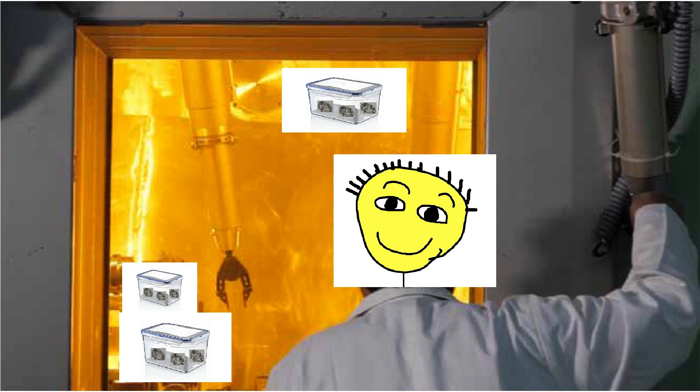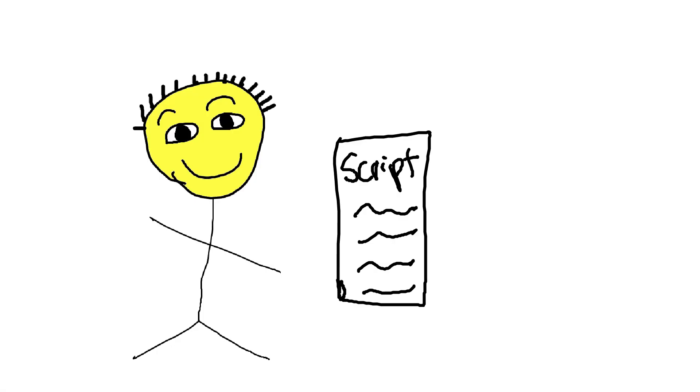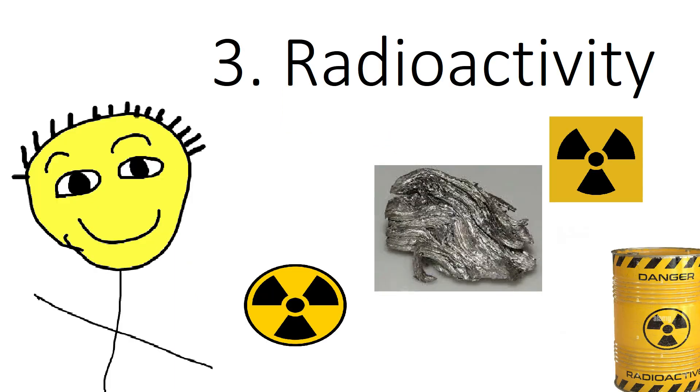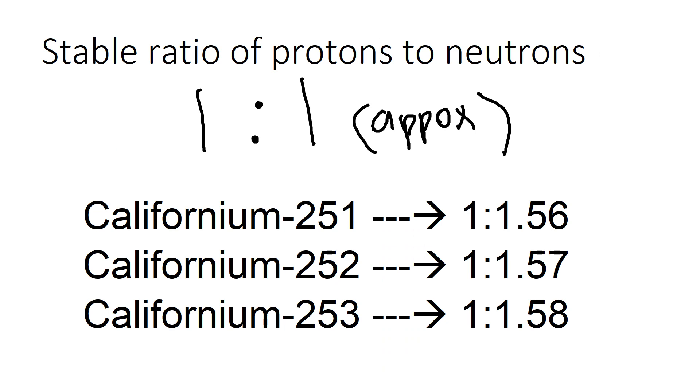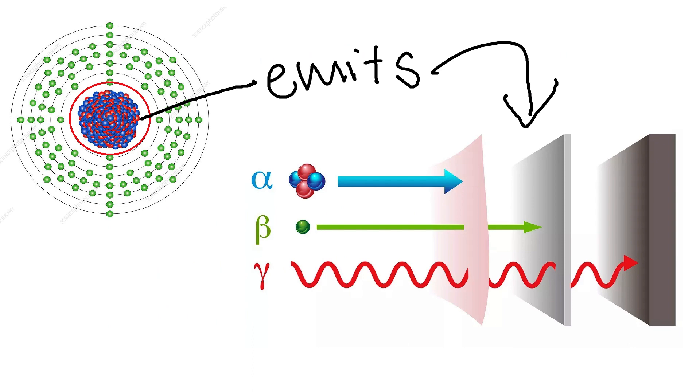This makes it very challenging to measure its physical properties. Another important physical property of Californium is its radioactivity. Californium's radioactivity is a result of its unstable nucleus, which has an excess of protons and neutrons relative to the number of neutrons required for stability. This instability causes the nucleus to emit various types of radiation, including alpha particles, beta particles, and gamma rays.